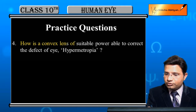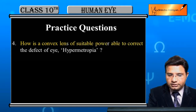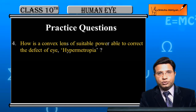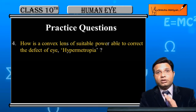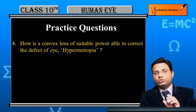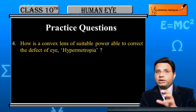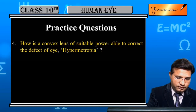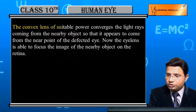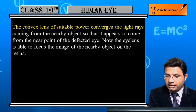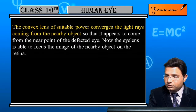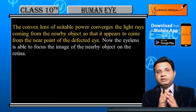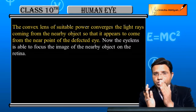How is a convex lens of suitable power able to correct the defect of hypermetropia? A converging lens converges the light rays coming from a nearby object so that it appears to come from the near point of the defected eye. This means that the hypermetropic eye's near point is at 25 cm.